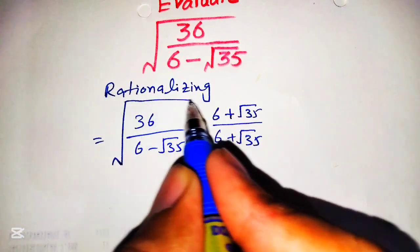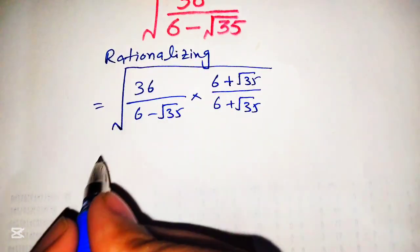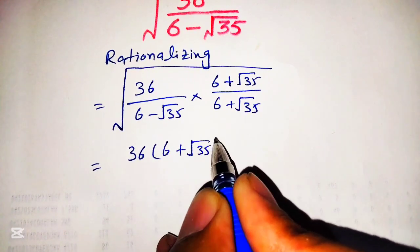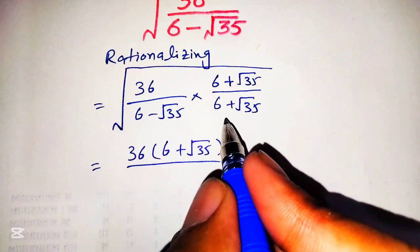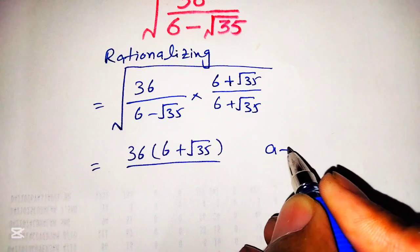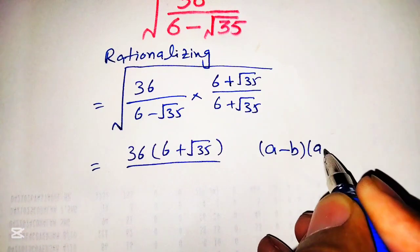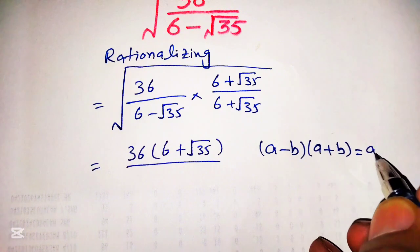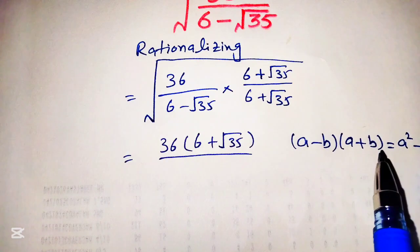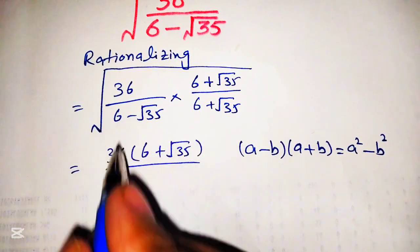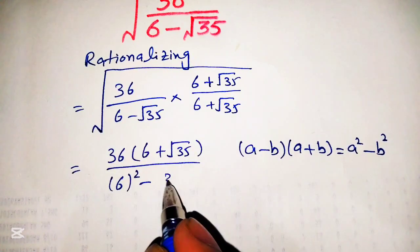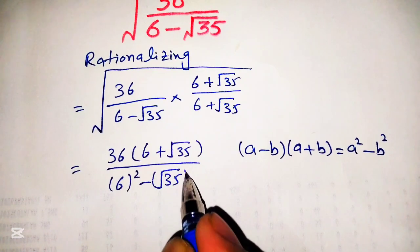This will be multiplied and we will get 36 into 6 plus square root of 35 over the denominator. In the denominator, we will use the famous mathematical formula a minus b times a plus b equals a squared minus b squared. So we write it as 6 squared minus square root of 35 squared, all under the square root.